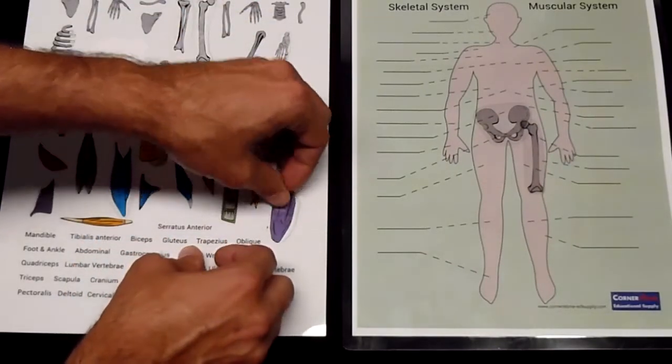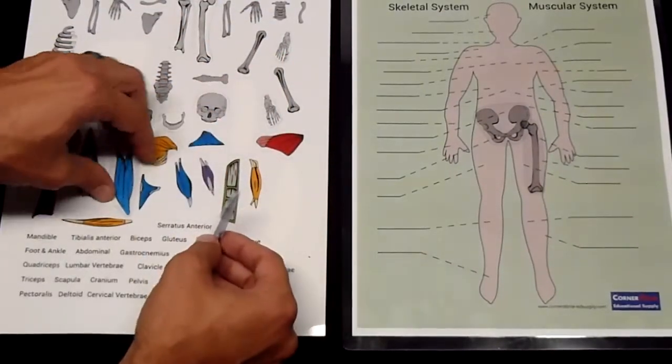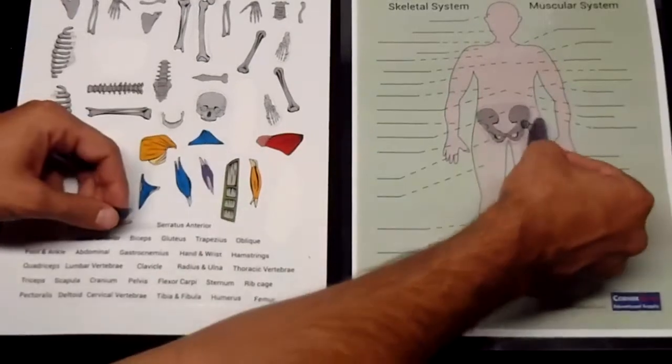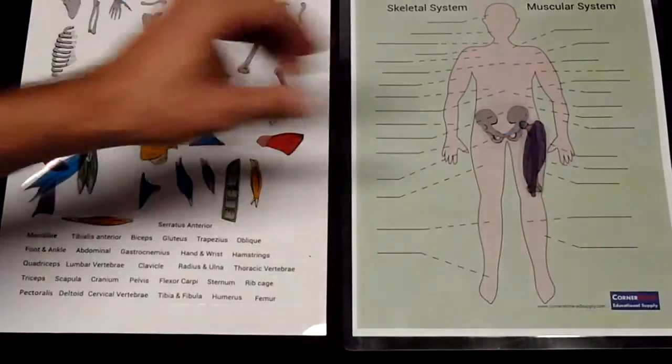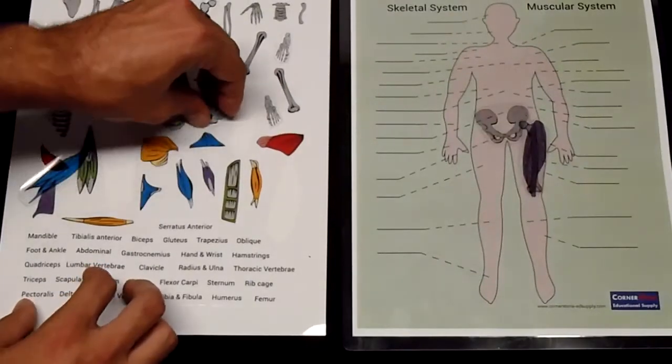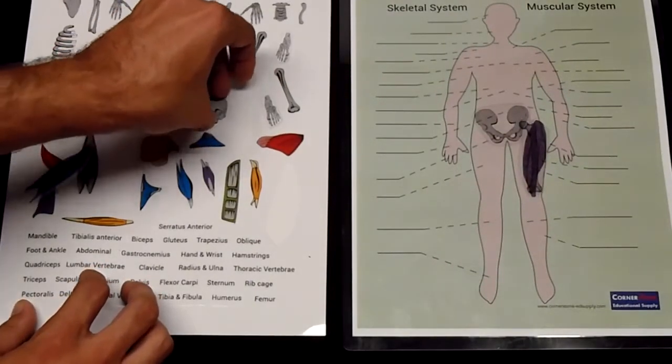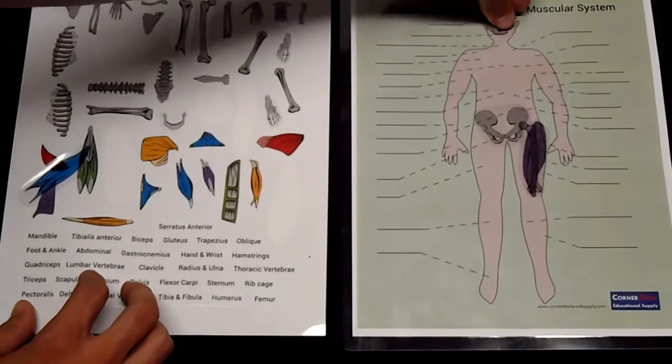We get muscles that go along with them, such as our quadricep muscles that go over top of the femur, and you're going to be able to layer an entire skeleton worth of stickers and a half side of the body full of muscles.